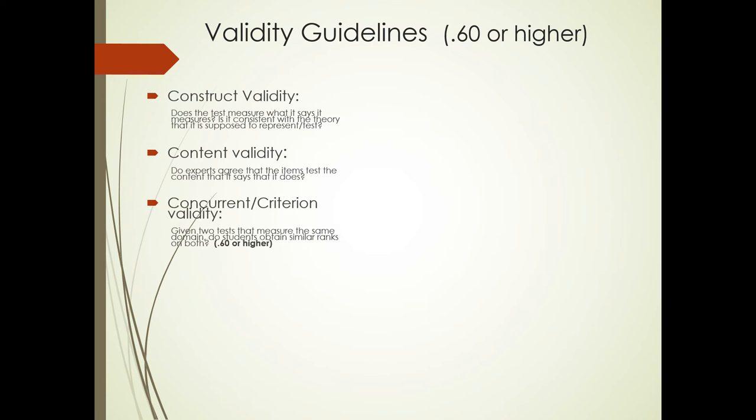Here in concurrent or criterion validity is where you'll see coefficients. So you're given two tests, one of them the new test that you're looking at or the test you're looking at using, and see if it correlates at least 0.60 or higher with another well-established test that tests the same thing. And very important but very seldom documented is predictive validity. Does a high score on this test predict future performance? For example, does the ACT or the SAT predict college success at the end of freshman year? You'll be surprised that in most cases it does not.